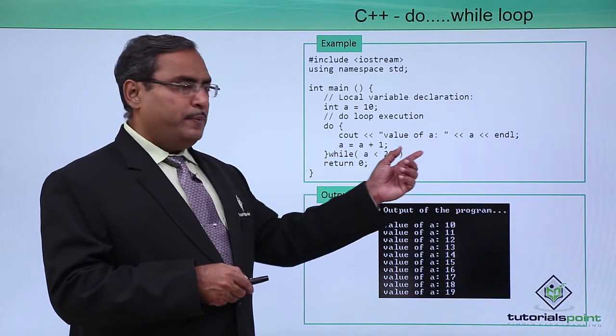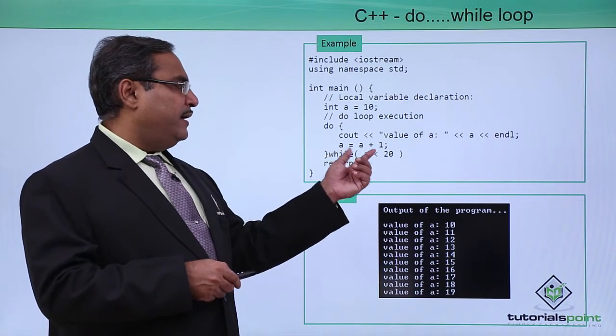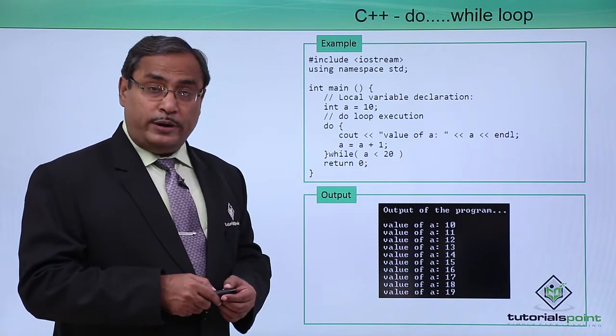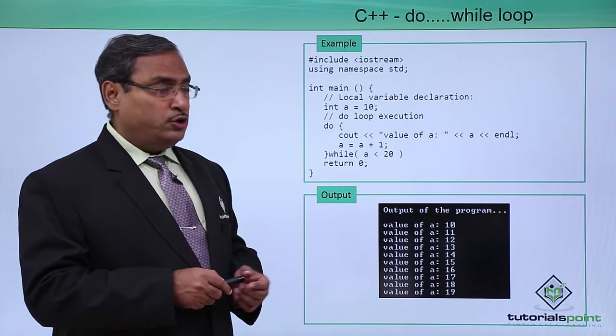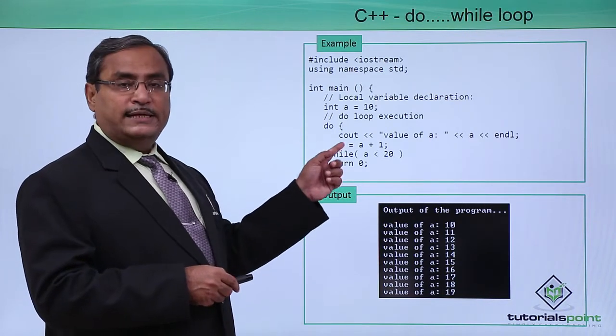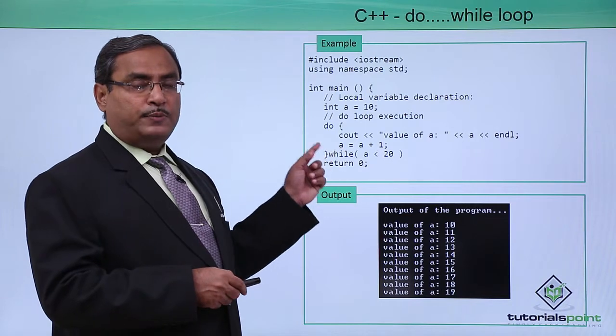At first 10 will be printed, then it will become 11. If the current value of a is less than 20, then the while condition will be true and the loop will go on executing for multiple number of times.